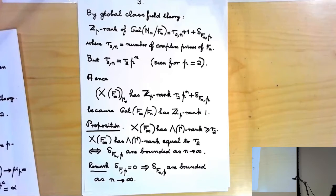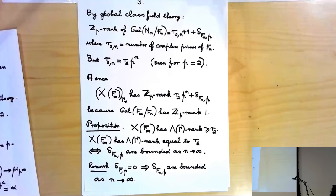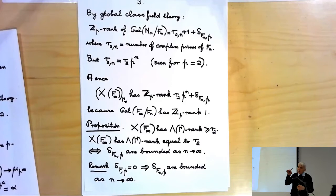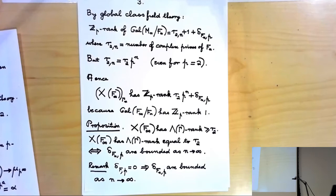This holds for any ZP extension. Unfortunately, we don't know how to prove in general that the delta(F_n, P) are bounded as n tends to infinity for an arbitrary ZP extension — this is unknown. We only know it for the cyclotomic ZP extension, and I'll be explaining Iwasawa's proof. One little remark as an exercise: if we knew at the bottom, or anywhere up the ZP extension, that the Leopoldt defect is zero just once, then by this Iwasawa theory argument, it would follow that it has to be bounded all the way up.